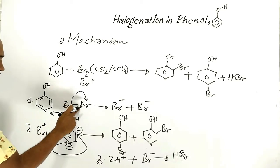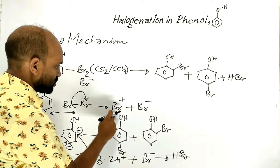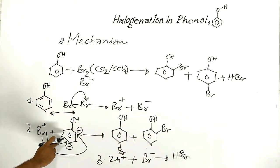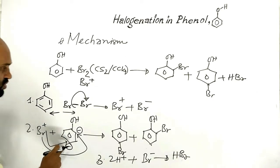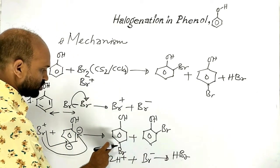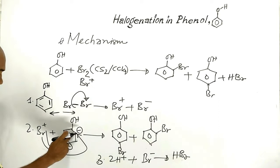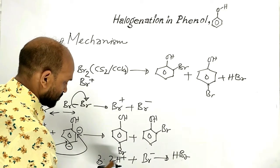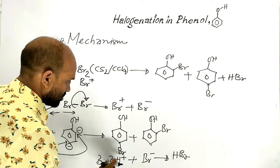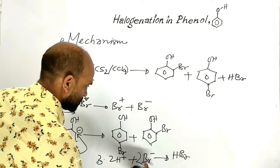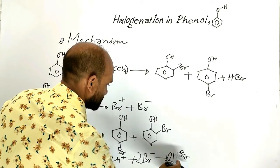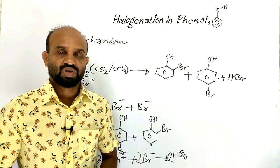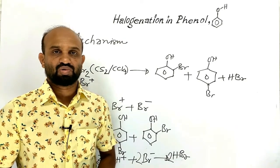In summary: interaction between phenol and bromine molecule produces a bromine cation and bromide ion. This bromine cation attacks phenol at ortho and para positions to form ortho-bromophenol and para-bromophenol. From the ortho and para positions, two hydrogen atoms go out as protons. These two protons combine with two bromide ions to form two hydrogen bromide molecules. This is how bromination occurs in phenol in the presence of carbon disulfide or carbon tetrachloride.